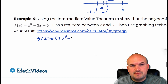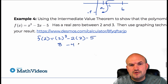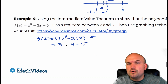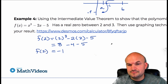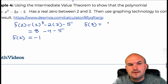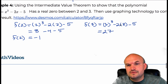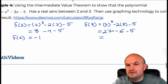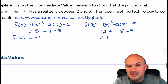Plugging in 2: 2³ - 2(2) - 5 = 8 - 4 - 5 = 4 - 5 = negative 1. So F(2) = -1. Now let's check F(3): 3³ - 2(3) - 5 = 27 - 6 - 5 = 27 - 6 is 21, minus 5 is positive 16. So F(3) = 16.